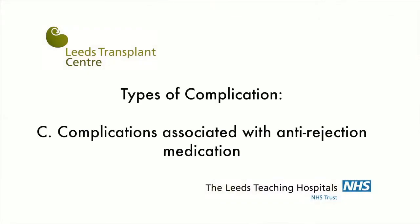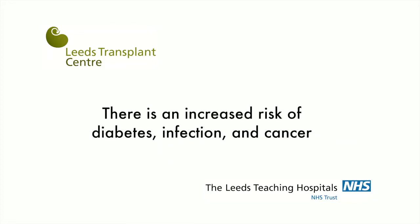The long-term risks of immunosuppression include diabetes, infection, and cancer. Diabetes may improve after three months with the lowering of the dose of immunosuppression. Occasionally the diabetes may persist and require treatment with insulin. The risk of infection is highest in the first three months. We advise you to avoid contact with infected persons or being in closed crowded spaces for long periods of time.